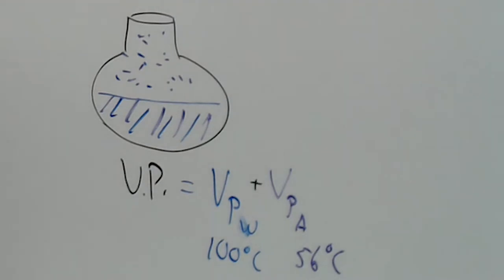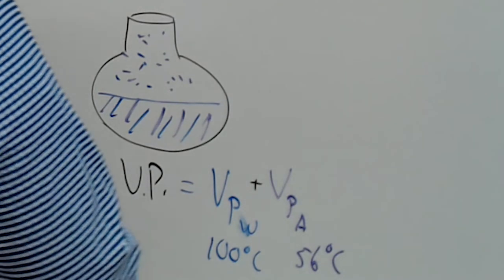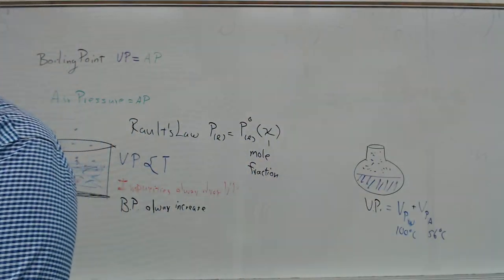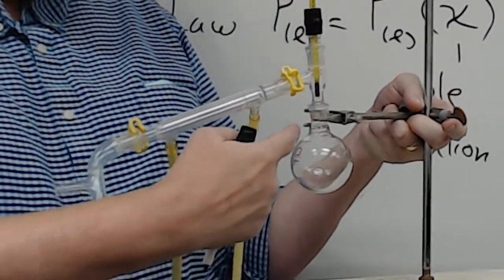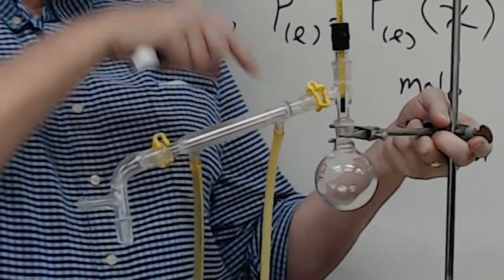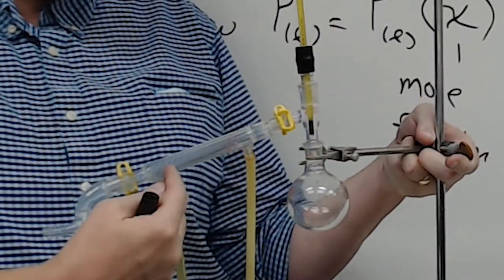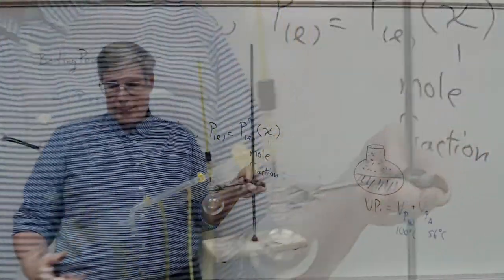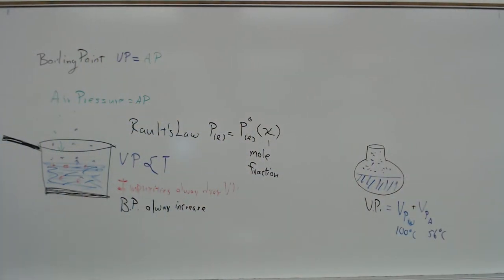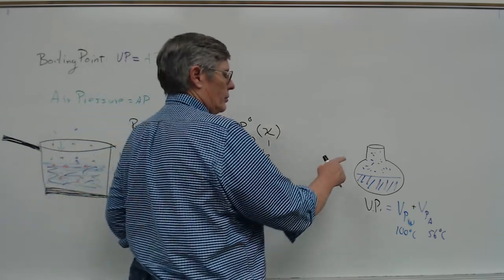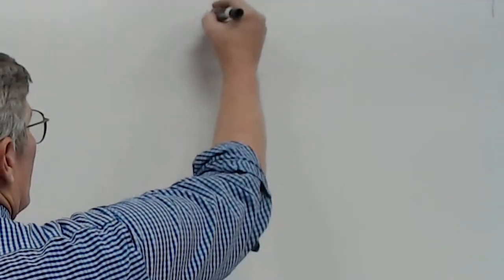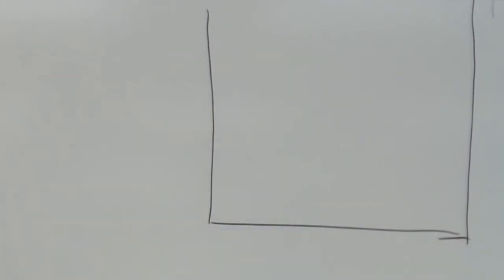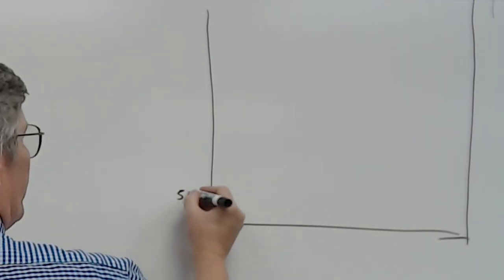We're going to first do a simple distillation. The pot will have a mixture, the vapors will reach the thermometer set right where the vapors change and go down the condenser, and we're going to measure the temperature of those vapors as they go across and down. I'm going to do a pretend graph on the board — you'll have the opportunity to do a real-life graph. I'll start at 50 and go to 100, beginning with a 50-50 mixture of the two components.